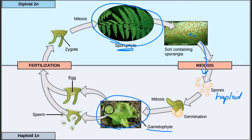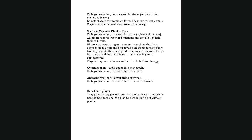The gametophyte produces both sperm and egg. When those two haploid cells fuse, they restore the diploid nature — forming the zygote or baby plant — which divides by mitosis back into the sporophyte generation. Plants are important in all ecosystems: they produce oxygen, reduce carbon dioxide, and are the base of most food chains. Without plants we'd eventually be dead.